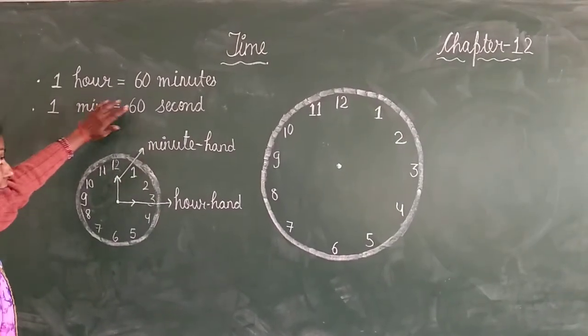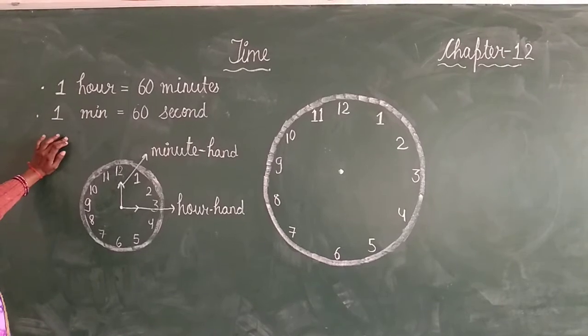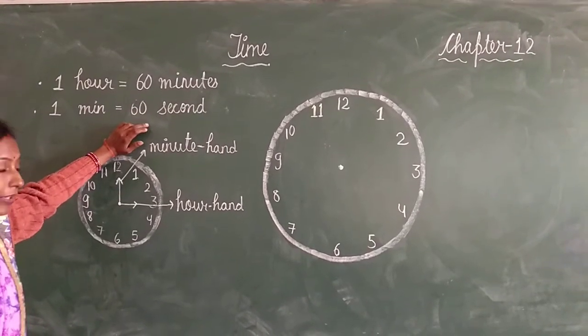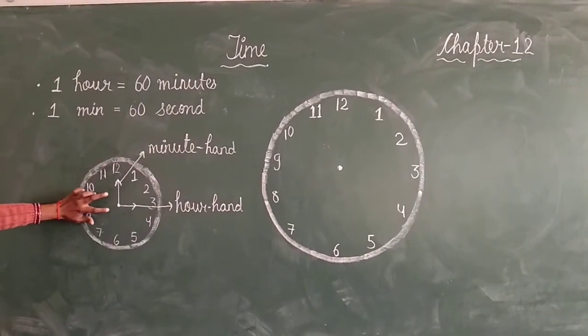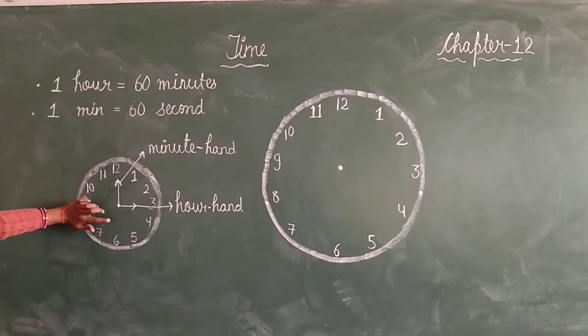In one hour there are 60 minutes and in one minute there are 60 seconds. In a watch there are two hands. One is long and the second is short.